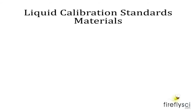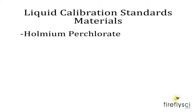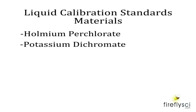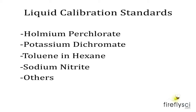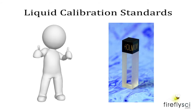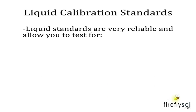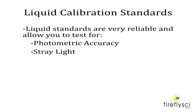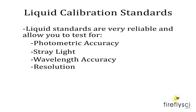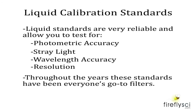Liquid standards are made of different types of chemicals such as holmium perchlorate, potassium dichromate, toluene in hexane, sodium nitrite, and a few others. The chemicals are placed into a 10mm cuvette, and different manufacturers have different methods for sealing the chemicals safely in the cuvettes. Liquid standards are very reliable and allow you to test for photometric accuracy, stray light, wavelength accuracy, and resolution.